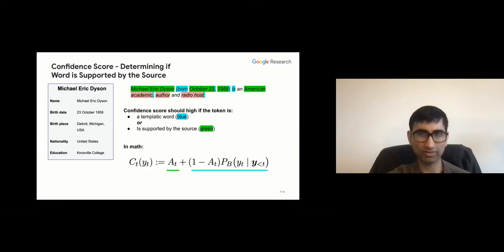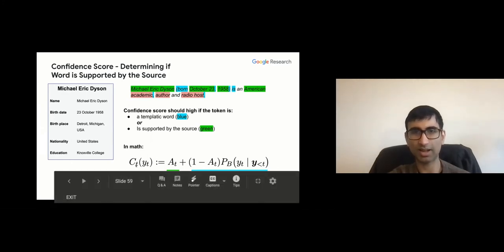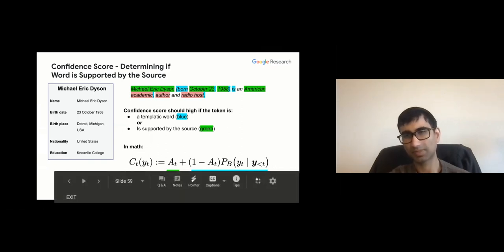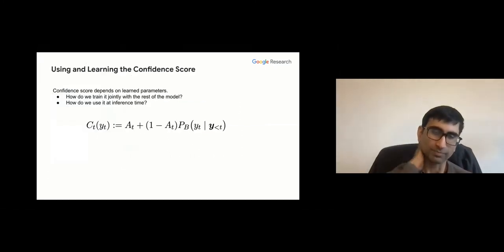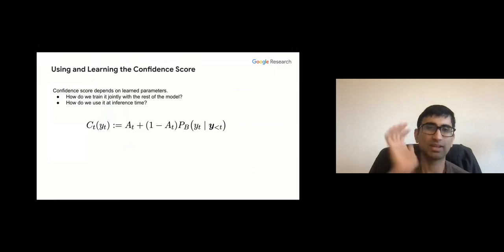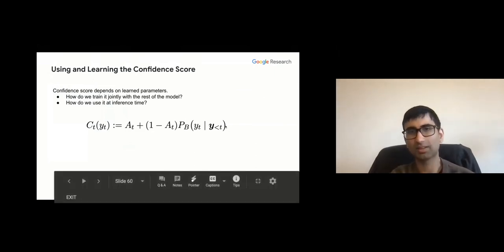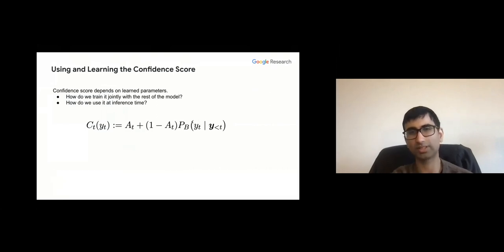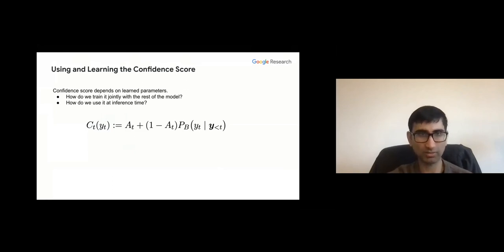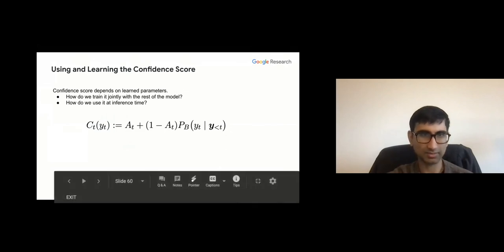The confidence score at position t is high if at is high or if the base language model score is high — mathematically this is an addition. The issue is this score depends on learned parameters: at is a function of model parameters, and the base language model also has parameters. We want to train jointly with the rest of the model and also use it at inference time.